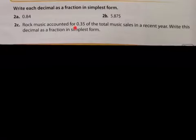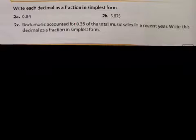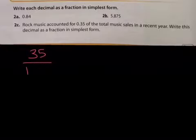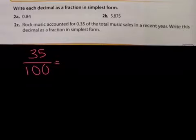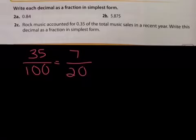Rock music accounted for 0.35 — or 35 hundredths — of the total music sales in recent years. Write this decimal as a fraction in simplest form. This is clearly 35%, or 35 hundredths. When you simplify, any number ending in 0 or 5 is divisible by 5. On the top I have seven 5s, and on the bottom I have twenty-5s — so the answer is 7/20, and that is in simplest form.